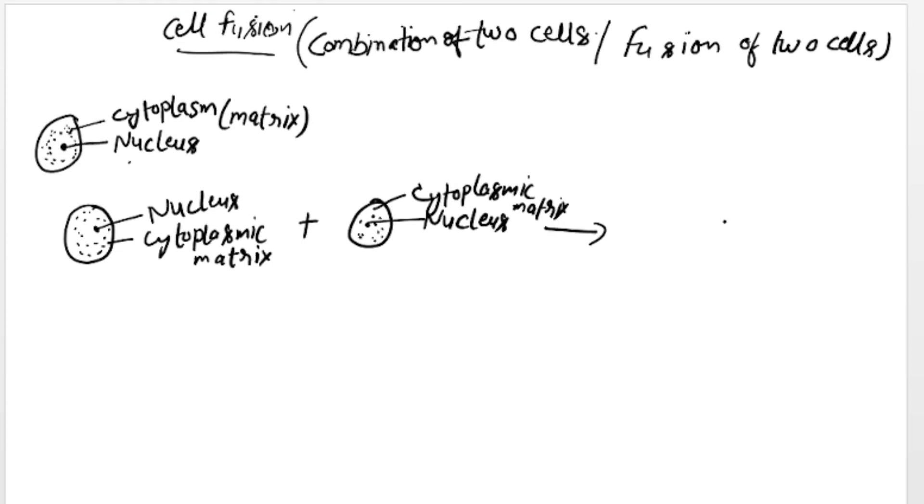When both combined, they form a new cell. This is a cell that contains the cytoplasmic matrix of both the cells and the nucleus of both the cells. This is the nucleus of both the cells which are combined.